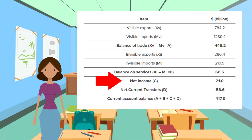Now let's look at current transfers. These include payments between governments for international cooperation and other transactions that involve no direct payment or productive activity. Debits or outflows include financial aid, donations, pension payments paid to overseas residents and foreign governments, and tax and excise duties paid by UK residents on foreign purchases.